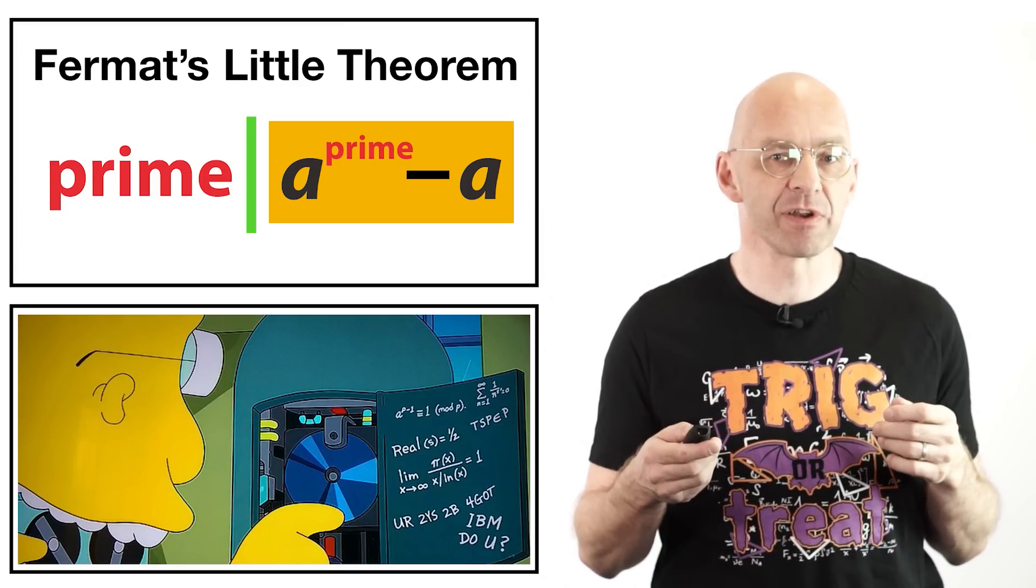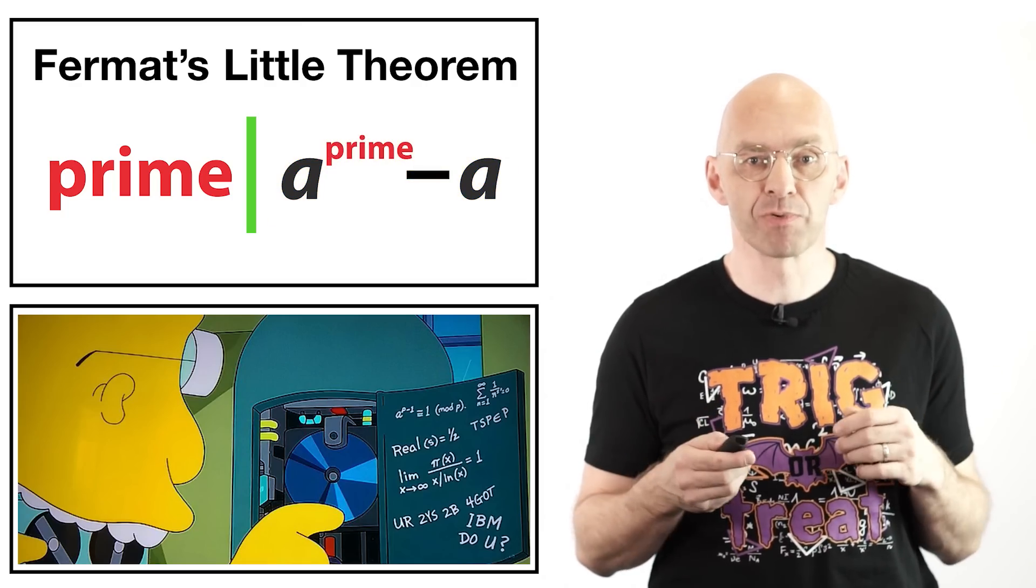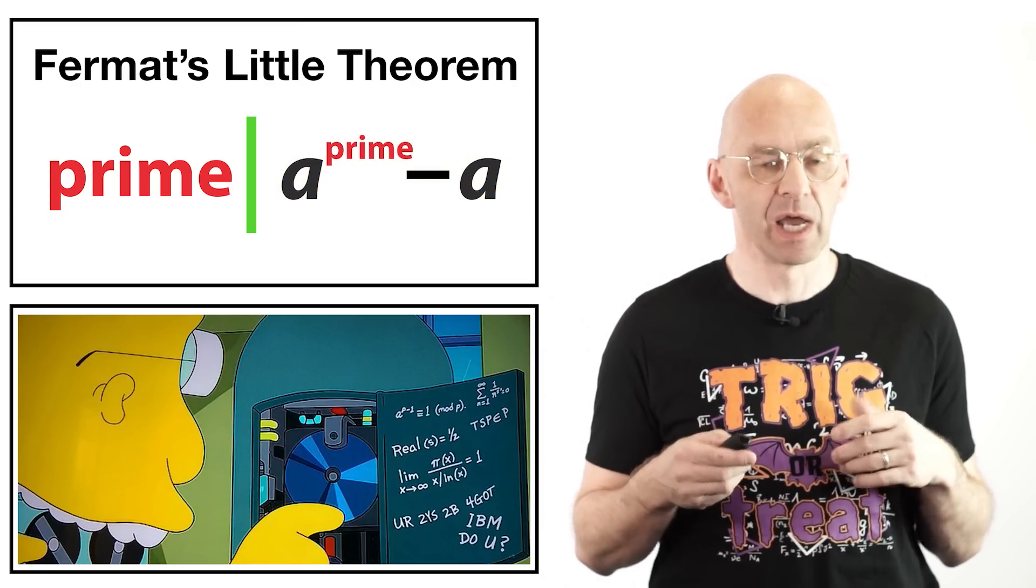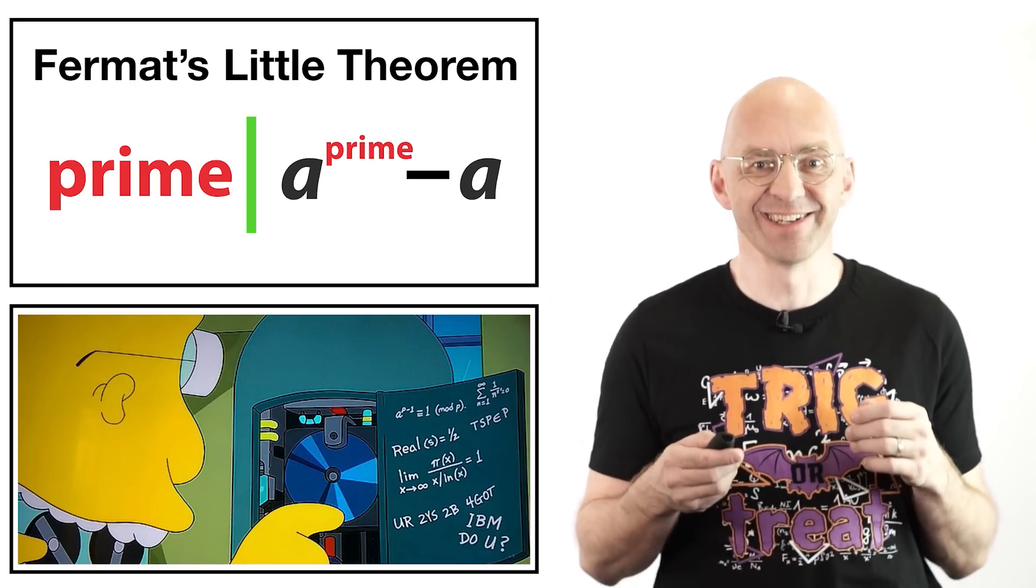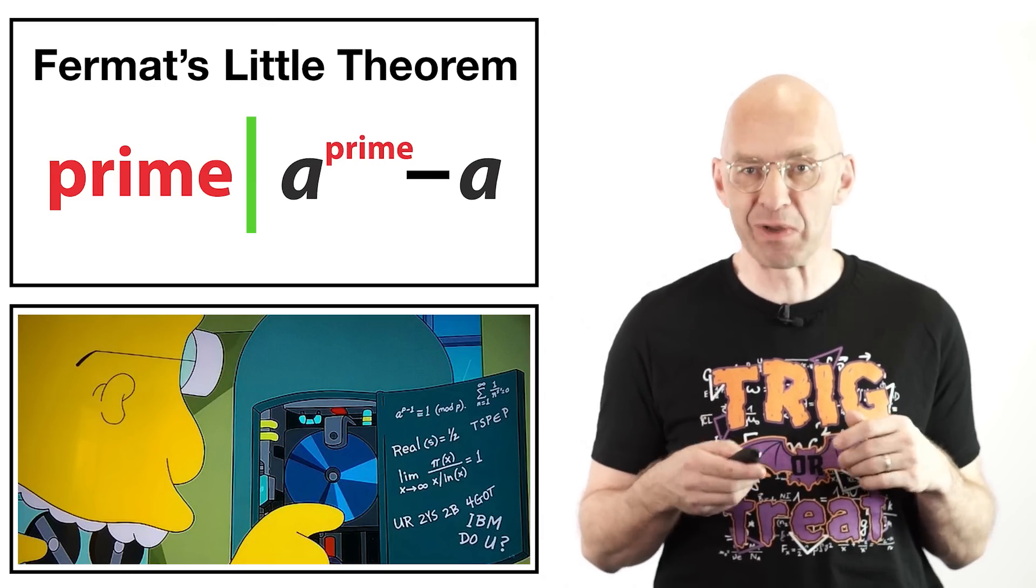How can we be sure Fermat's little theorem is always true, no matter what monster size prime and integer we've chosen? And why should we care? Of course mathematicians care simply because that's the way we're built.